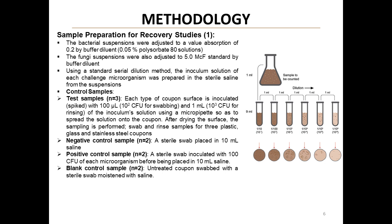Preparing samples for our recovery studies was a meticulous process. We started by adjusting our bacterial suspensions to a specific optical density using a buffer diluent of 0.05% polysorbate 80 solution. For fungal suspensions, we adjusted to a 5.0 McFarland standard. We then prepared our inoculum solutions using a standard serial dilution method, allowing us to achieve the precise concentrations needed. Our test samples involved inoculating each coupon surface with a known quantity of microorganisms: 100 µL containing about 10² CFU for swab sampling and 1 mL containing about 10³ CFU for rinse sampling.